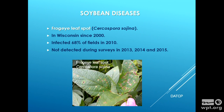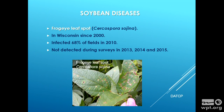Another one we want to keep tabs on is frogeye leaf spot. We know it goes back to at least 2000 when we had a lot of fields infected, but in the last couple of years we really haven't seen it. It produces frogeye-shaped spots on the leaf, so it's something you can spot fairly easily in the field.